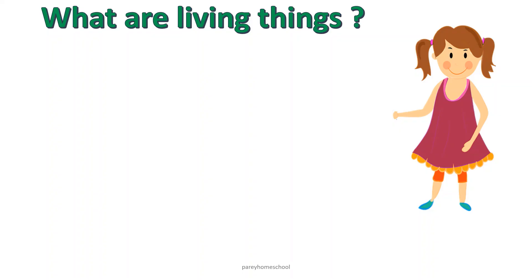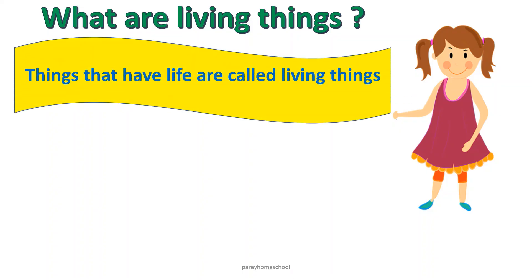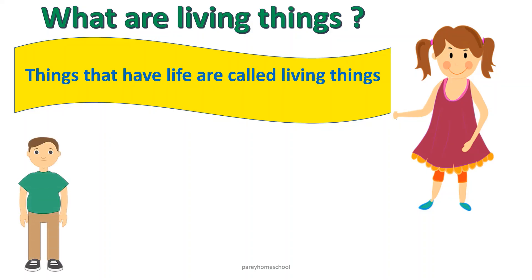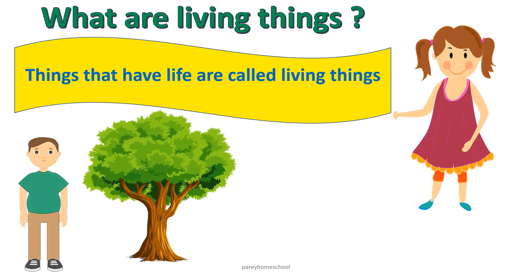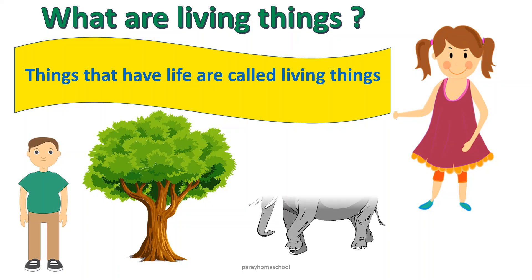We see many things around us. Some are living things and some are non-living things. Things that have life are called living things. For example, humans, plants or trees, and animals. These are living things because they have life.